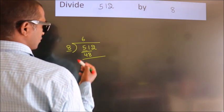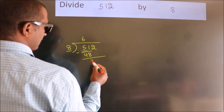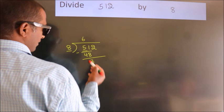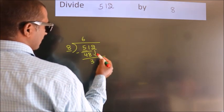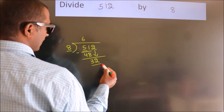Now, we should subtract, we get 3. After this, bring down the beside number. So, 2 down. So, 32.